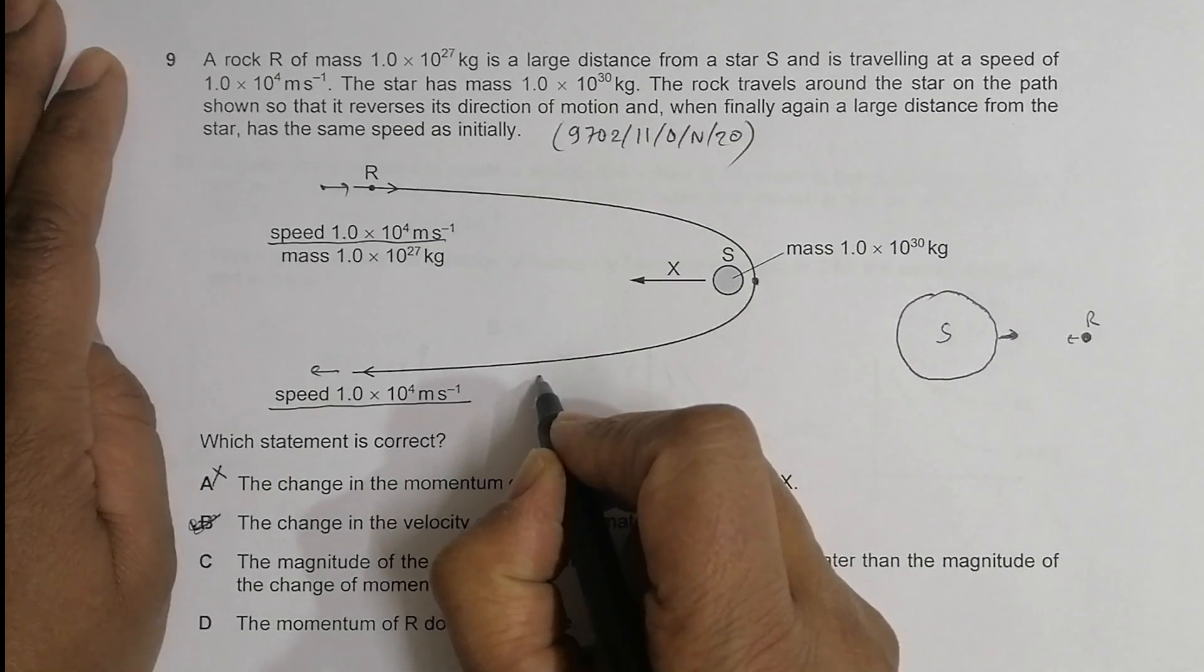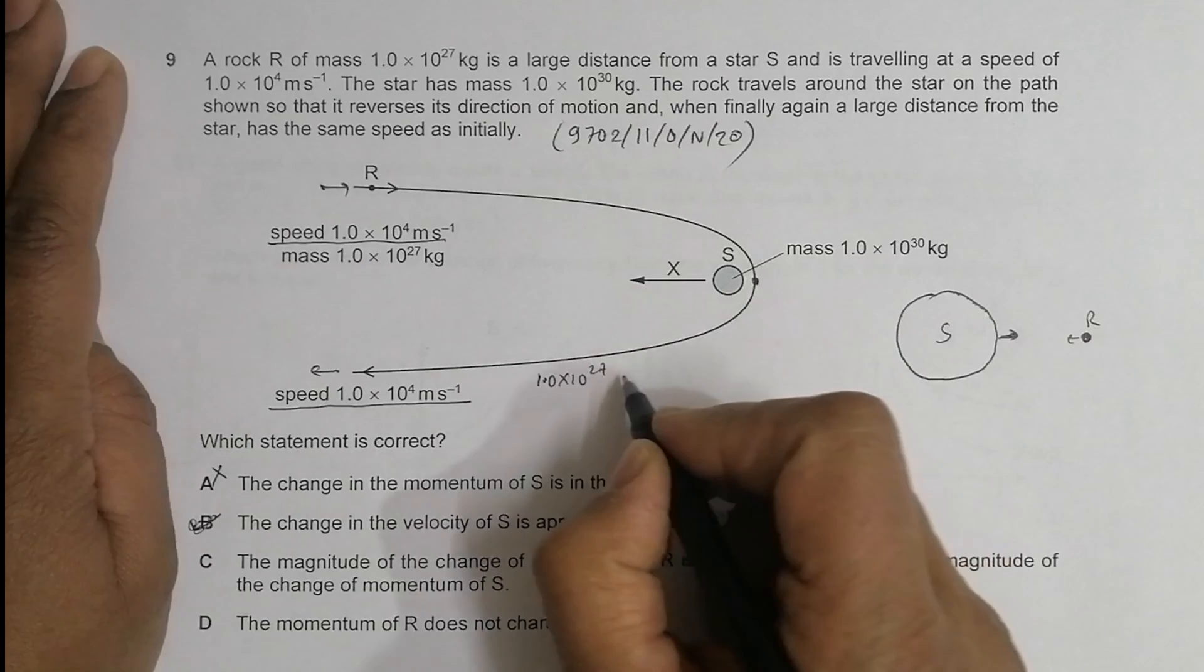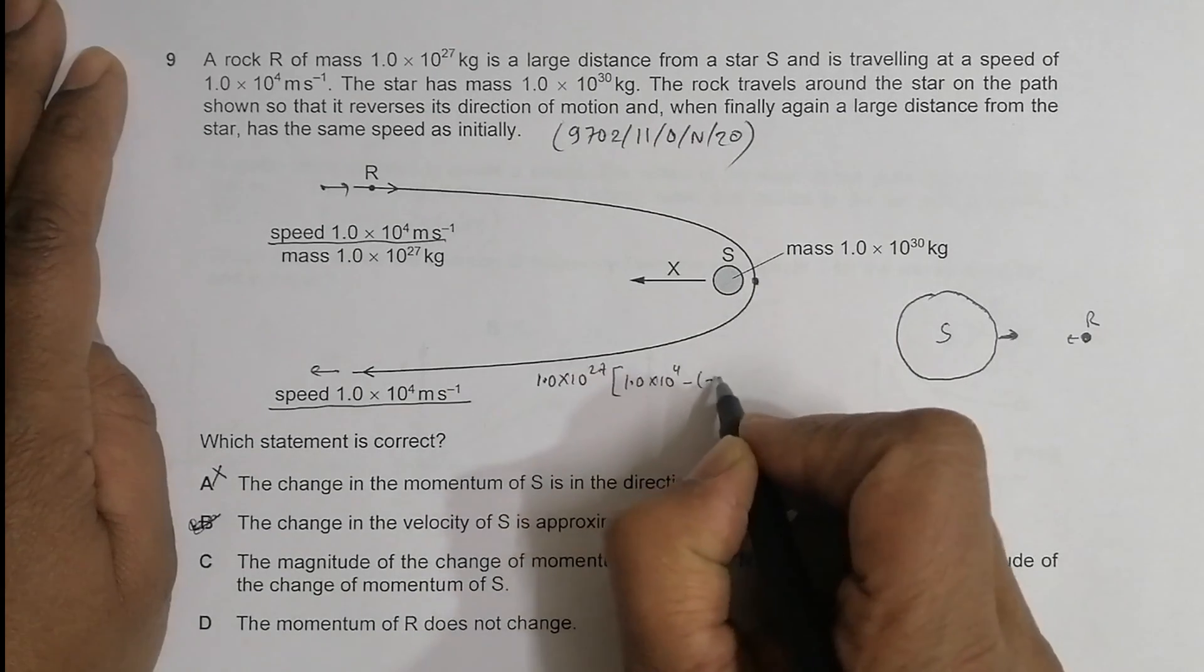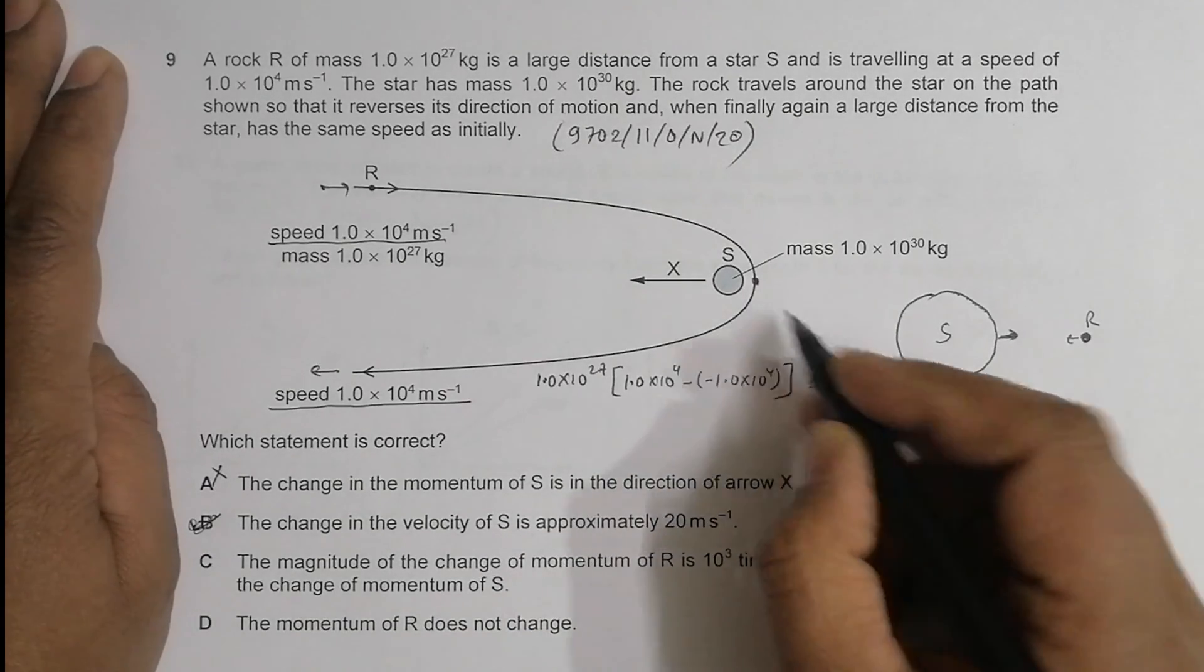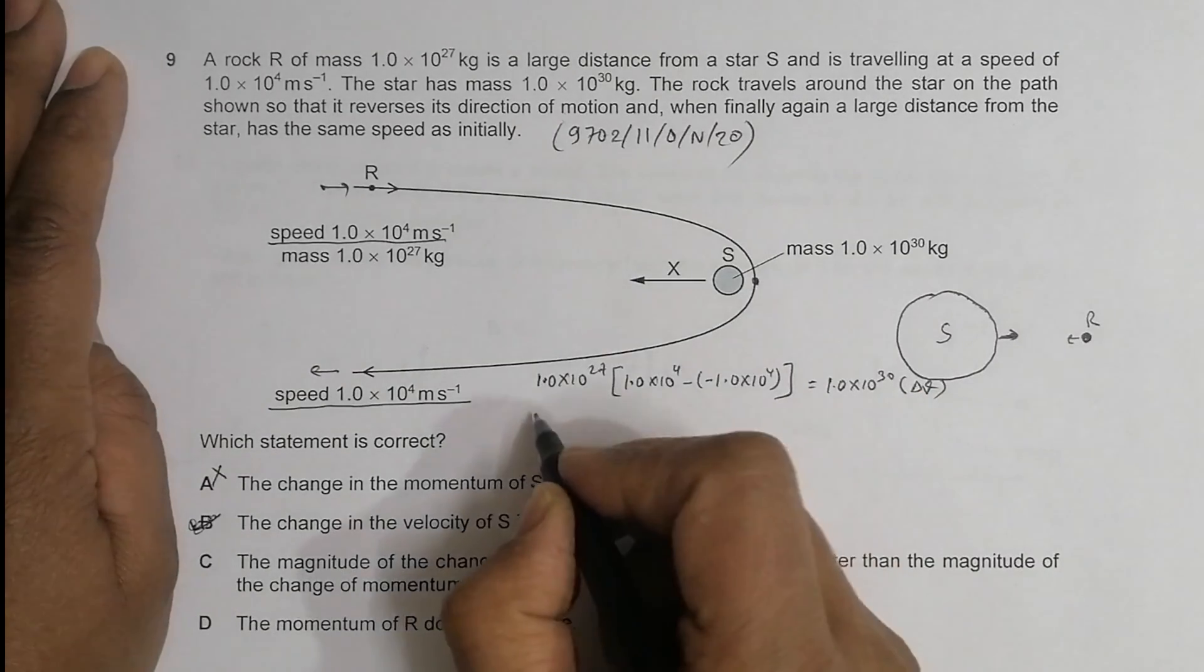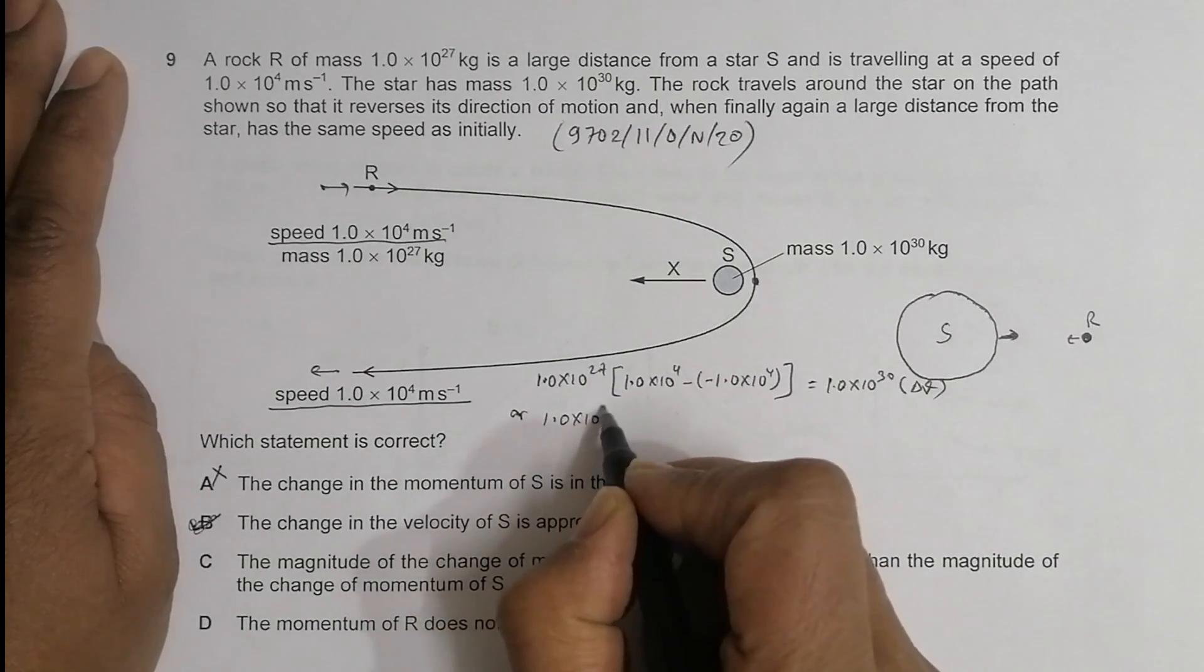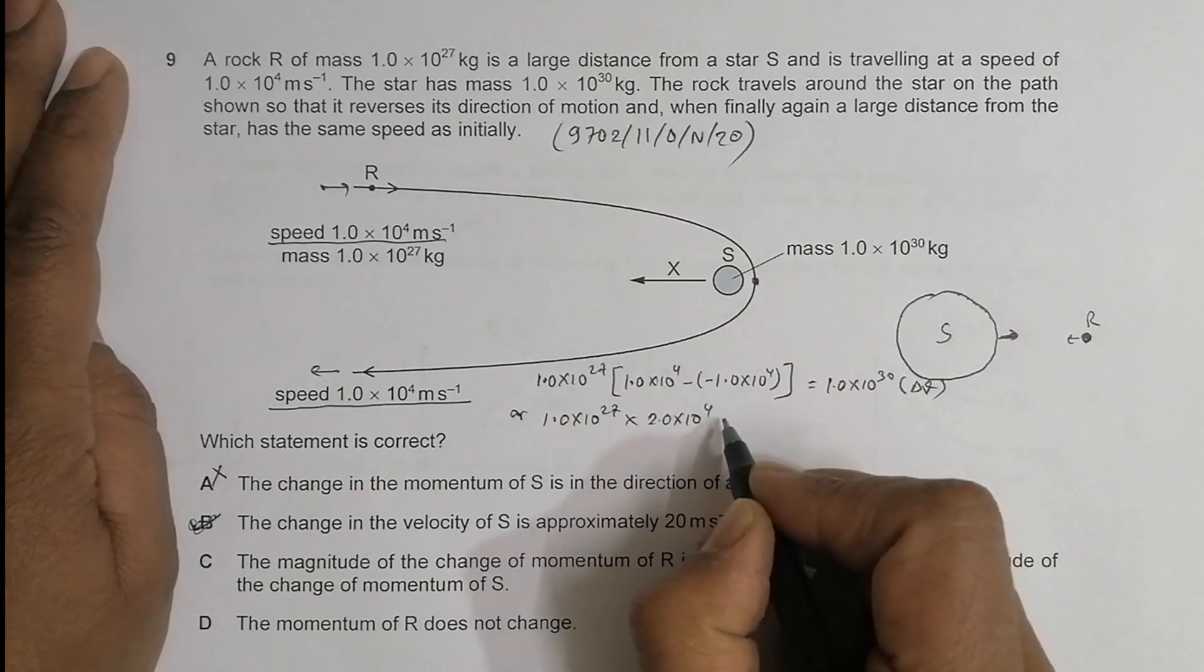For rock R, the change in momentum equals mass times change of velocity: 1.0×10²⁷ × (1.0×10⁴ - (-1.0×10⁴)) because it exactly reverses. This equals the mass of S, which is 1.0×10³⁰, times its change of velocity ΔV. So we have 1.0×10²⁷ × 2.0×10⁴ = 1.0×10³⁰ × ΔV.